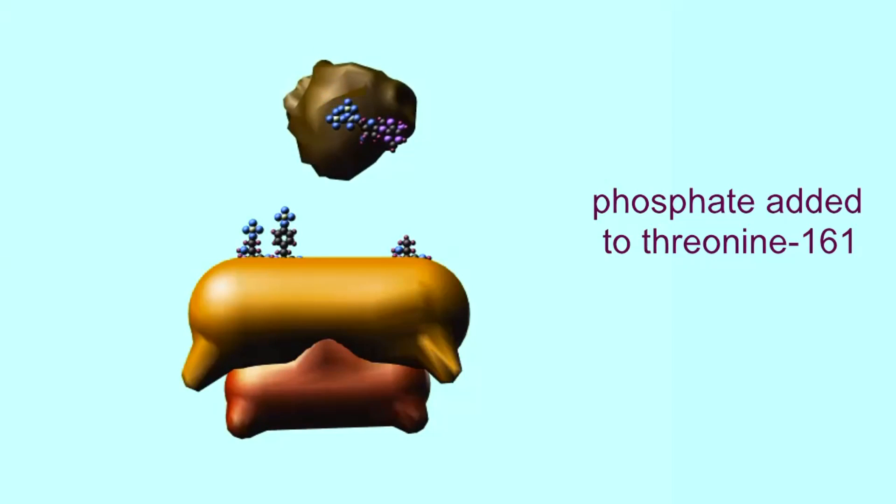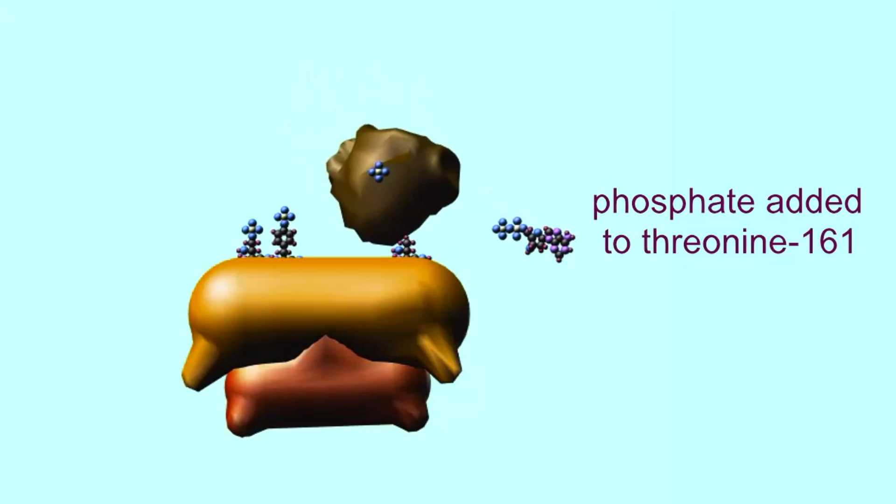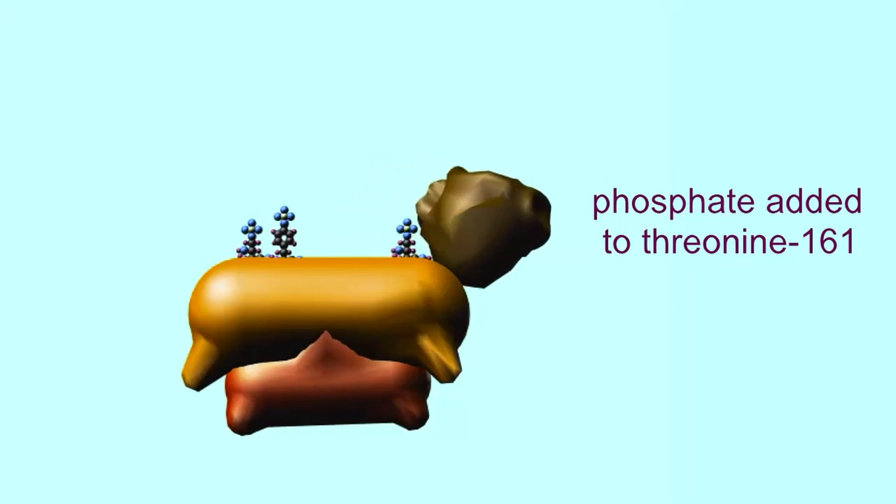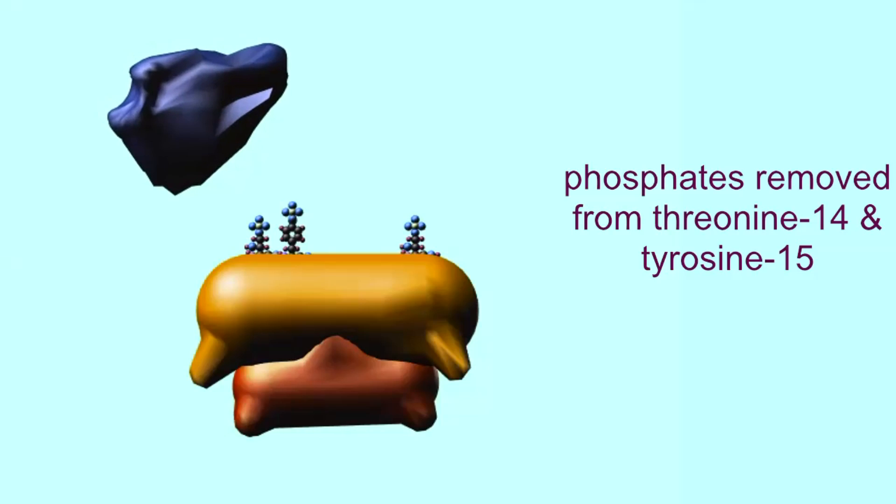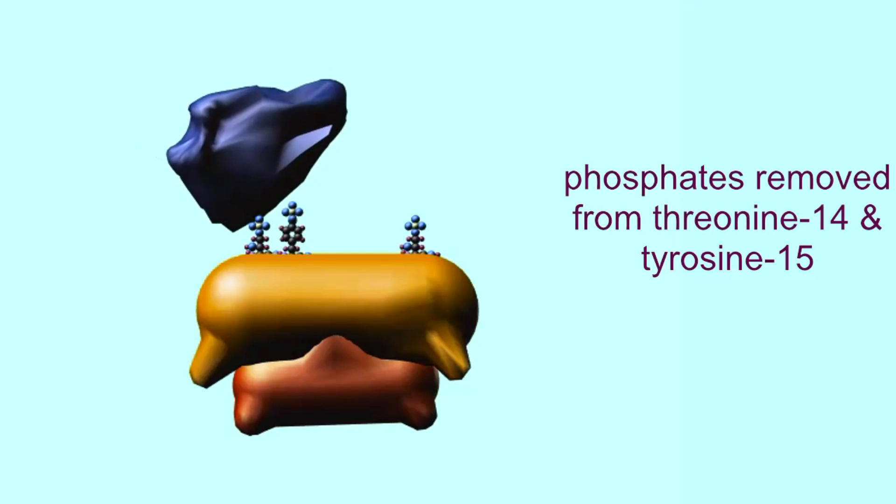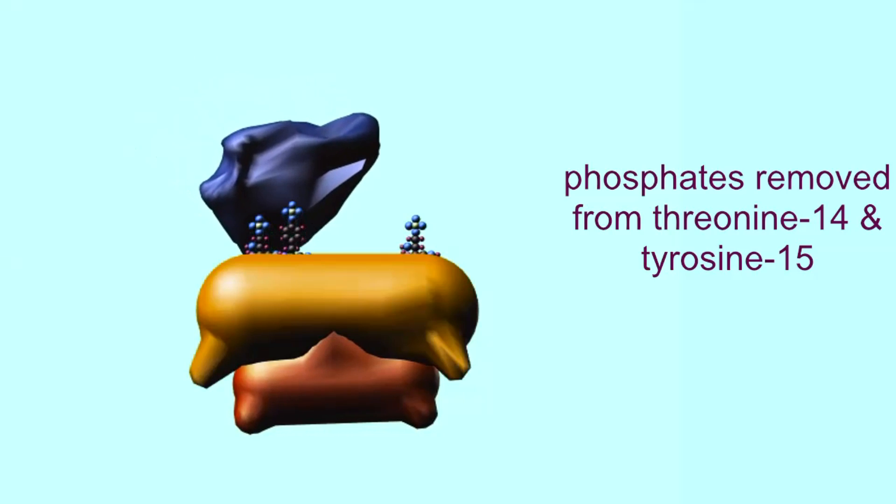Another position, the threonine at site 161, can later be phosphorylated as the cell has been triggered to divide. And then the phosphates on the threonine and tyrosine at sites 14 and 15 can be removed.